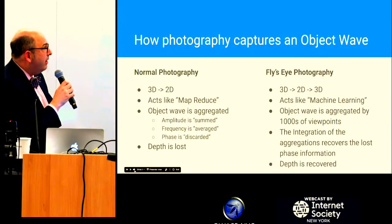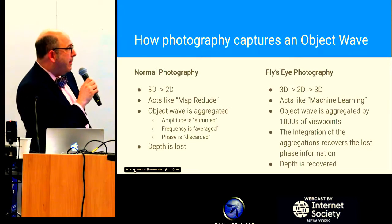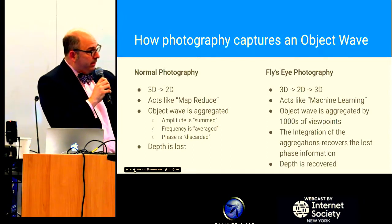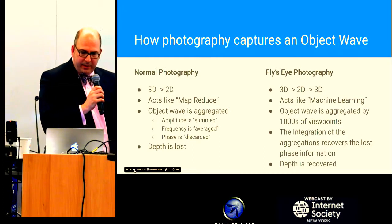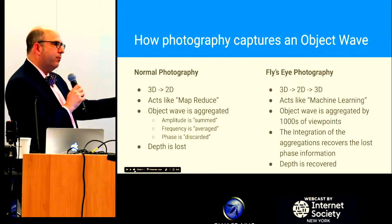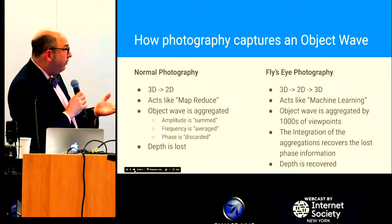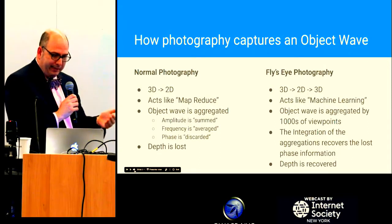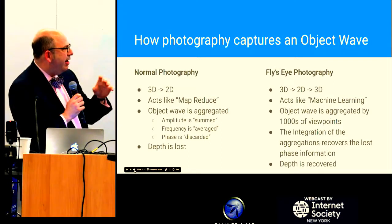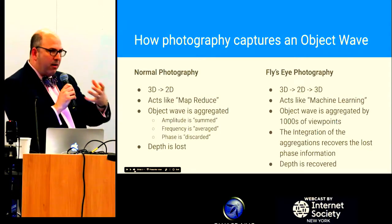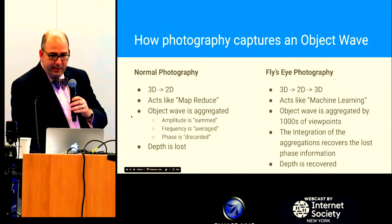Normal photography is a 3D to 2D process — for computer scientists, it's basically a map-reduce function. It takes a multidimensional object wave and flattens it: the amplitude gets summed, the frequency gets averaged, and the phase gets thrown away. The phase is what gives you depth, and that's what's lost. Our integral fly's eye photography goes 3D to 2D and then back to 3D — like machine learning, teasing out lost information. Because we know the geometry of each individual viewpoint, we can bring all those images together and recover the phase information, which gives you the depth.